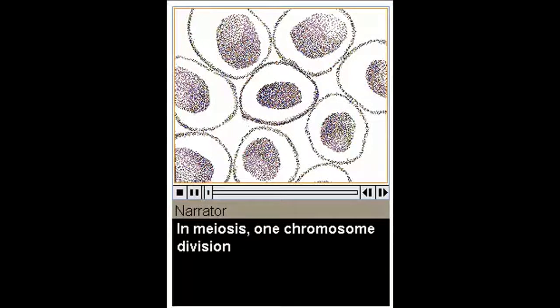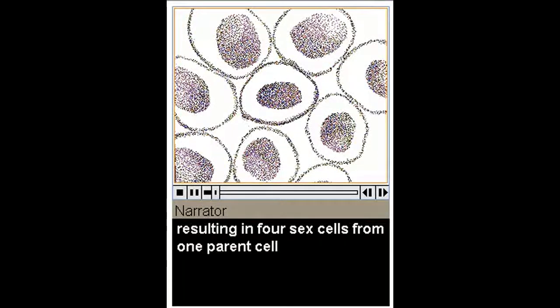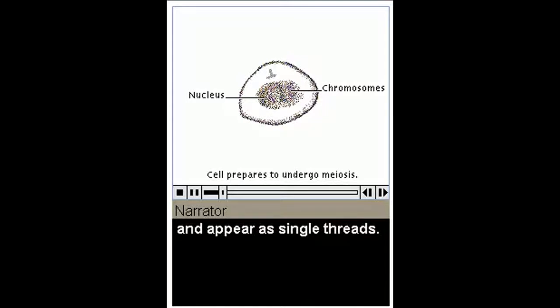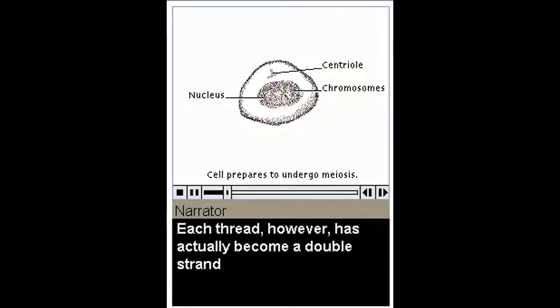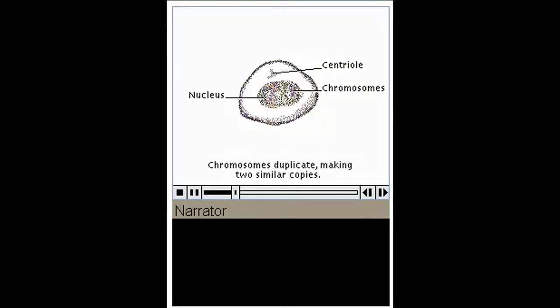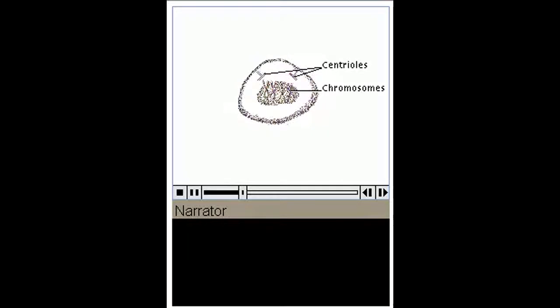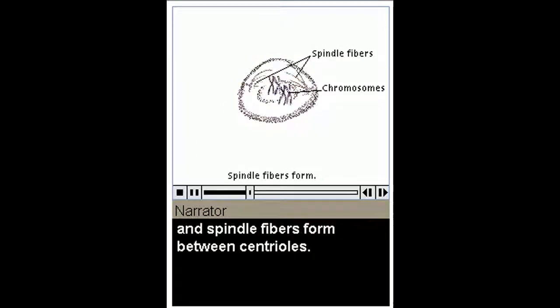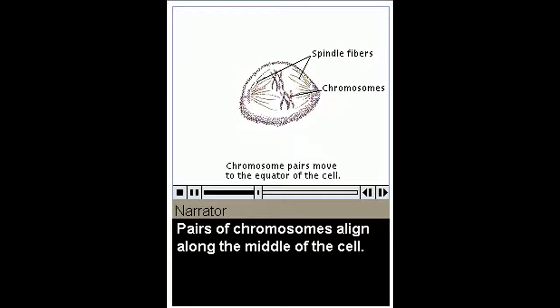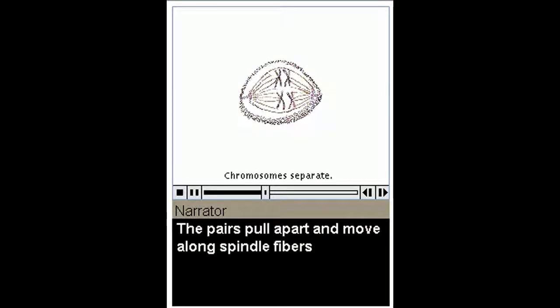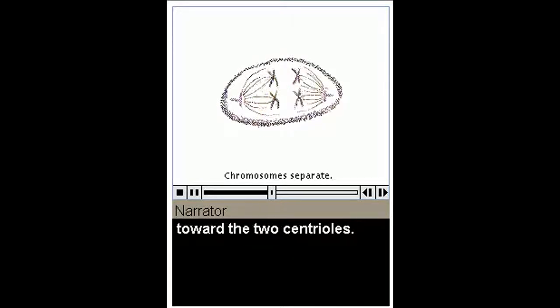In meiosis, one chromosome division and two cell division stages occur, resulting in four sex cells from one parent cell, each with half the number of chromosomes. The chromosomes become more distinct and appear as single threads. Each thread, however, has actually become a double strand of two identical chromatids. The centrioles replicate and move apart. The nuclear membrane becomes less distinct and spindle fibers form between centrioles. Pairs of chromosomes align along the middle of the cell. Each pair consists of two chromatids attached at the center.